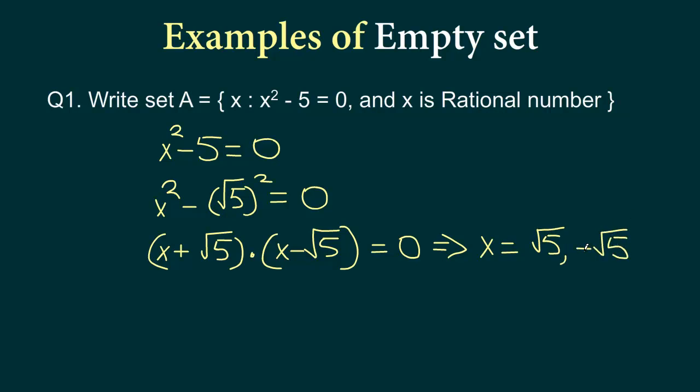So if our question is write set A such that it contains element x and x square minus 5 equals 0, if this is the only criteria, then our set A will look like plus square root 5, minus square root 5. So this should be the answer. But our actual question contains two conditions.